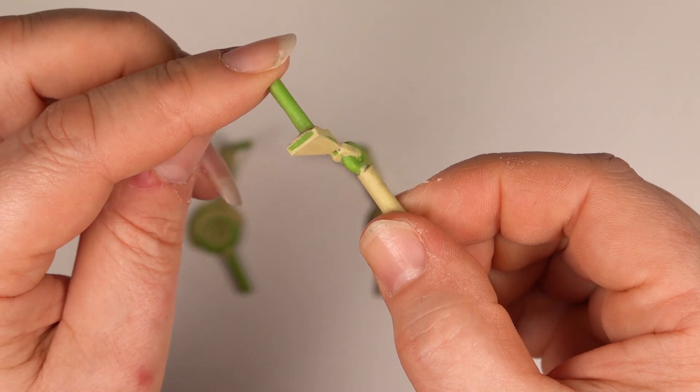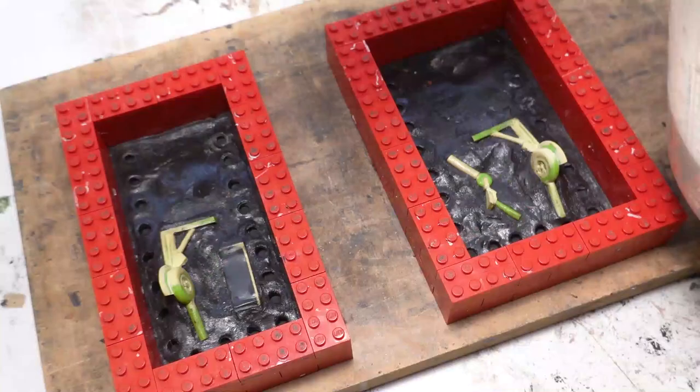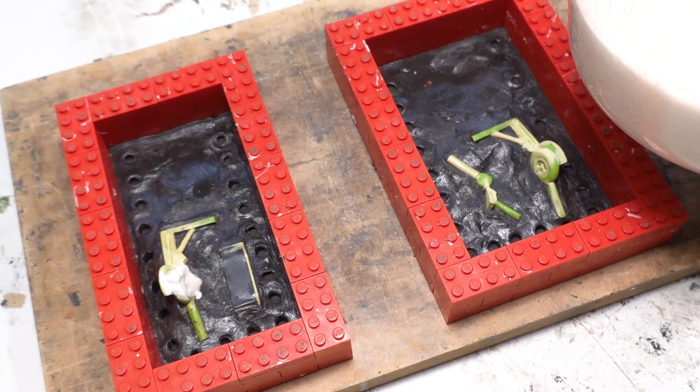The milliput parts need to be cast in pewter so that I can refine them and add detail. I make cold cure high temperature silicon rubber molds for the undercarriage initially by laying the parts into a bed of plasticine enclosed within a box of Lego.